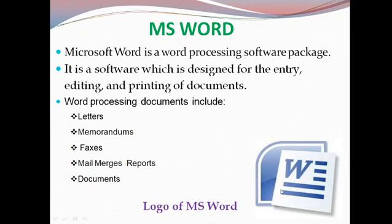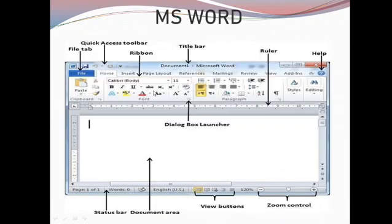This is the logo. When we are searching in the computer, it looks like this. These are the components of Microsoft Word, which consists of the title bar. When we open the software it shows Microsoft Word. We are creating a document — it is Document 1. This is the Quick Access toolbar and ribbon, which displays the icons related to the selected tab. Here we have selected the Home tab, and the icons related to Home are displayed here.